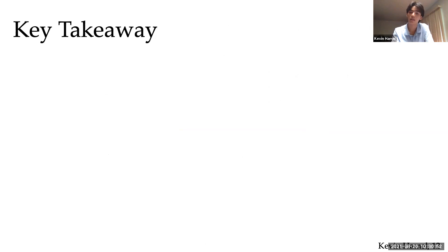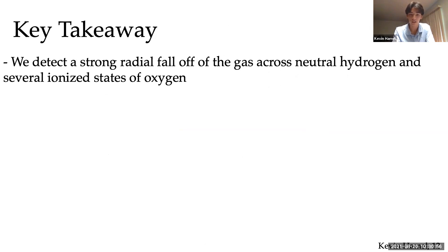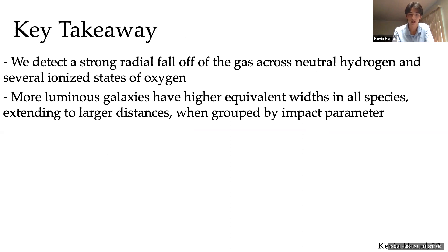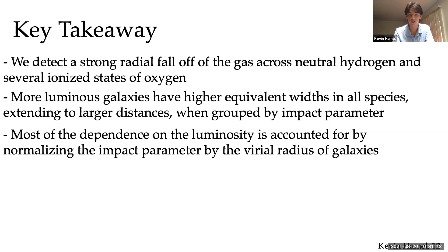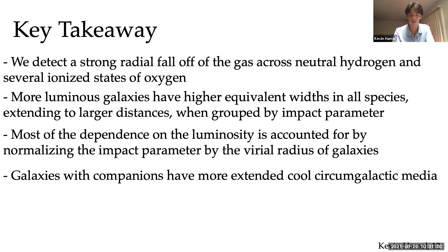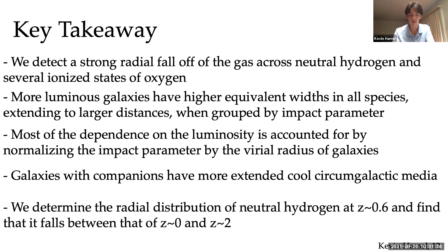So in summary, we investigated the intermediate redshift CGM with CUBS. We detected a strong radial falloff of gas across neutral hydrogen and several ionized states of oxygen. More luminous galaxies have higher equivalent widths in all species extended to larger distances when grouped by impact parameter. Most of the dependence on the luminosity was accounted for by normalizing the impact parameter by the virial radius of galaxies. Galaxies with companions have more extended, cool, circumgalactic media. And finally, we determined the radial distribution of neutral hydrogen at a redshift about point six and find that it falls between that of redshift zero and a redshift about two. So overall, the CUBS data provides a lot of different avenues to study this CGM. It shows that the gaseous environments of galaxies have a strong dependence on the properties of galaxies themselves. And there's a lot more to come. Thank you for your attention and I'd be happy to take any questions now.